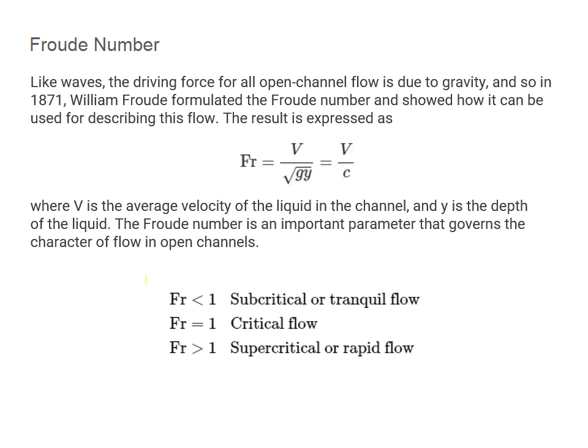If the Froude number is less than 1, the flow is classified as subcritical — in other words, tranquil. If the Froude number equals 1, it is referred to as critical flow. If the Froude number is greater than 1, it is known as supercritical or rapid flow. We can use the terms tranquil flow to represent laminar flow and rapid flow to represent turbulent flow.